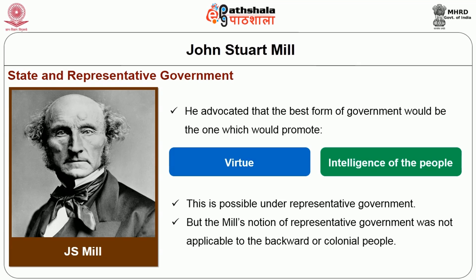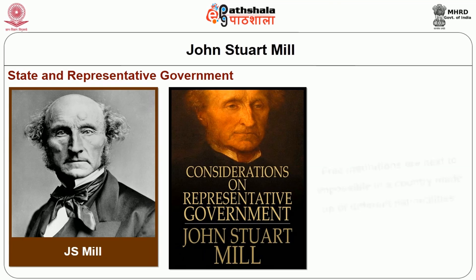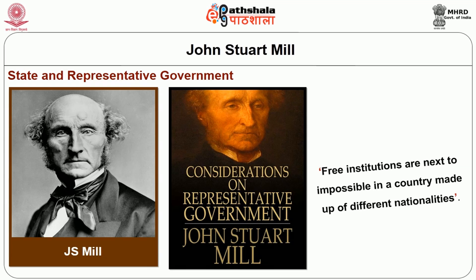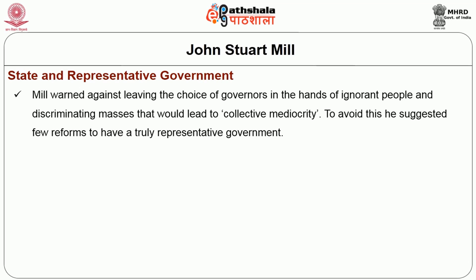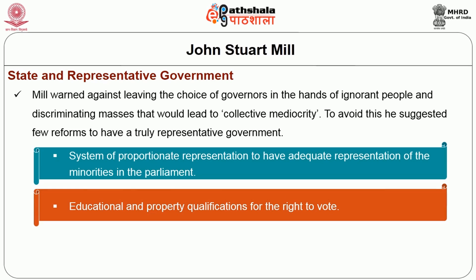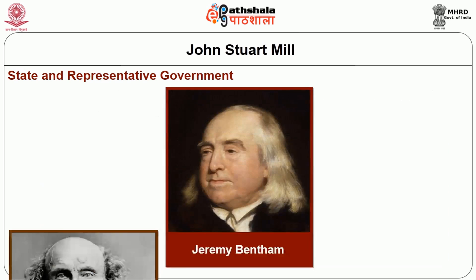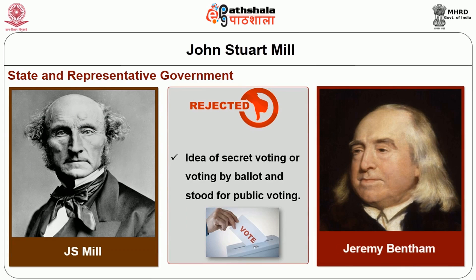Mill advocated that the best form of government would be one which would promote virtue and intelligence of the people, and this is possible under the representative government. But Mill's notion of representative government was not applicable to backward or colonial people. In his work Considerations on Representative Government written in 1861, Mill argues that free institutions are next to impossible in a country made up of different nationalities. Mill also warned against leaving the choice of governors in the hands of ignorant people and discriminating masses, as that would lead to collective mediocrity. To avoid this, he suggested few reforms: the system of proportionate representation, adequate representation of minorities in parliament, educational and property qualifications for the right to vote, and the system of plural voting — that is, numerical weightage of votes according to individuals' intelligence and education. Unlike Bentham, Mill rejected secret voting or voting by ballot and stood for public voting.